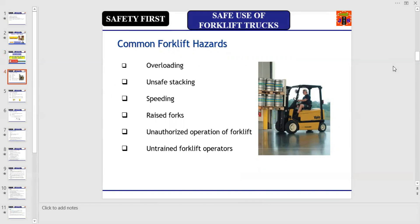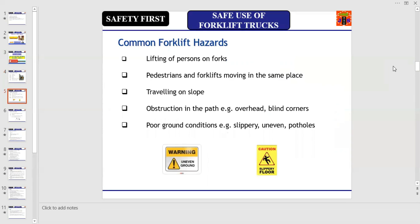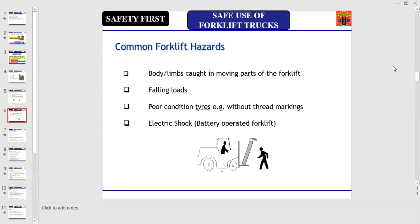Let us discuss what are the common forklift hazards that can cause an accident: overloading, unsafe stacking, speeding, raised forks, unauthorized operation of forklift, untrained forklift operators, lifting of persons on forks, pedestrians and forklifts moving in the same place, traveling on slopes, obstructions in the path such as overhead obstacles, blind corners, etc.